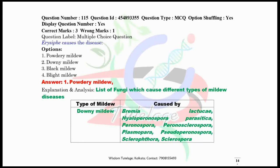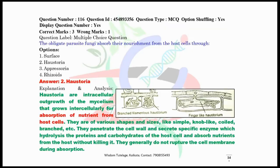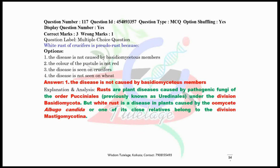Question number 115: Erysiphe causes the disease — obviously, powdery mildew. A list of different types of mildew diseases is shown here: powdery mildew, downy mildew, black mildew, grey mildew, and blight mildew — go through all the different types along with their causal organisms. Question number 116: Obligate parasite fungi absorb their nourishment from host cells through haustoria — the diagram and definition are shown here. Question number 117: White rust of crucifers is called pseudo-rust because the disease is not caused by basidiomycetes members.